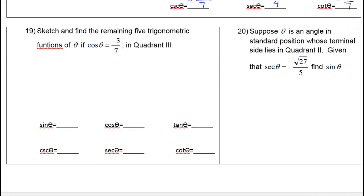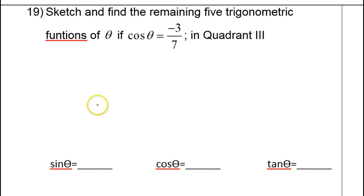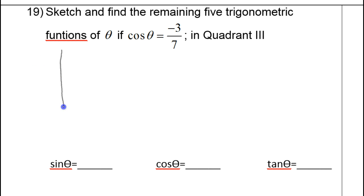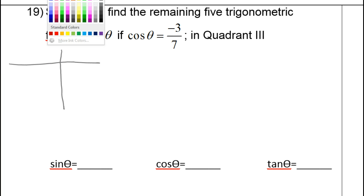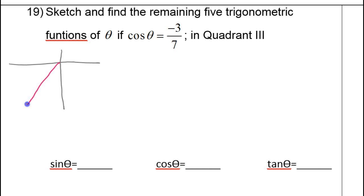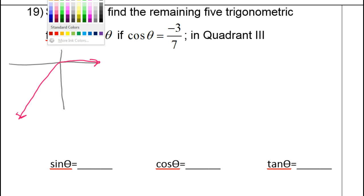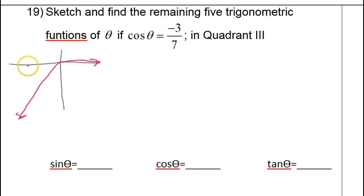Let's take a look at number 19. For number 19, the angle is in the third quadrant. Let's go ahead and draw our sketch into the third quadrant. So if I'm dealing with an angle in the third quadrant, let's draw a triangle by dropping a vertical line from the x-axis.